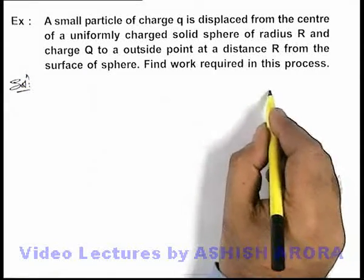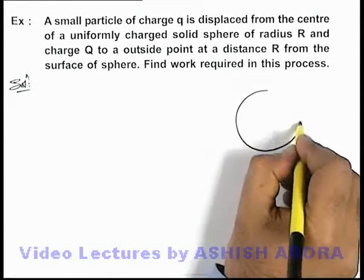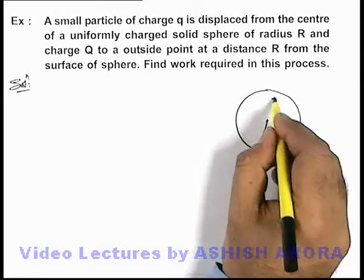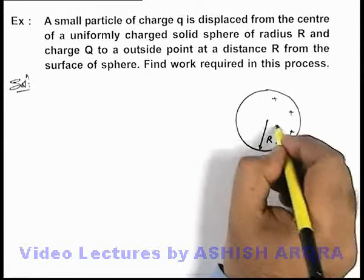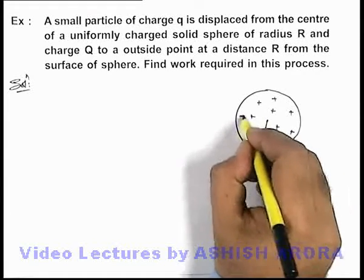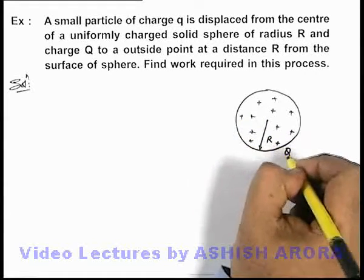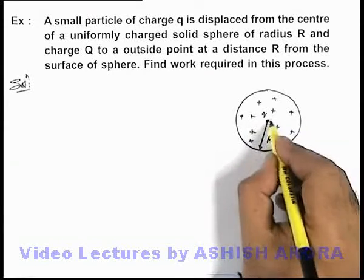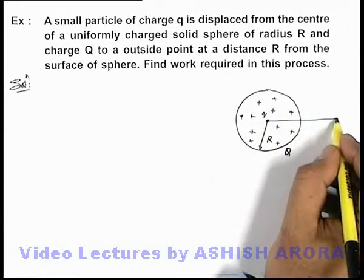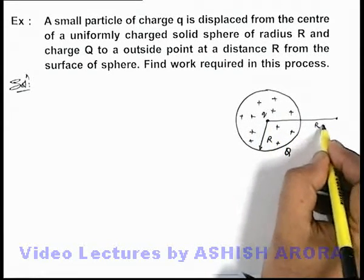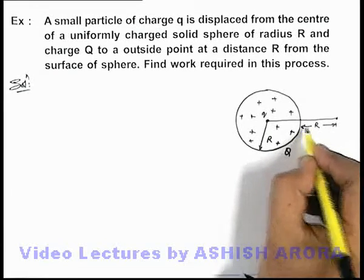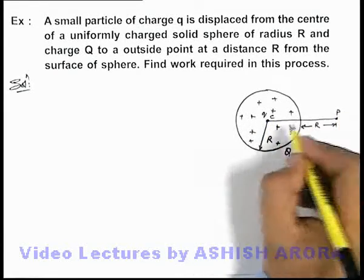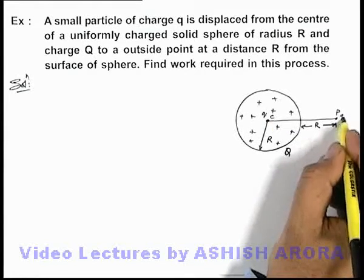If we just draw the situation, we have a solid sphere of radius capital R which is uniformly charged in its volume with charge capital Q. At its centre there is a particle having charge small q which is displaced from the centre to a point P located at a distance R from the surface.